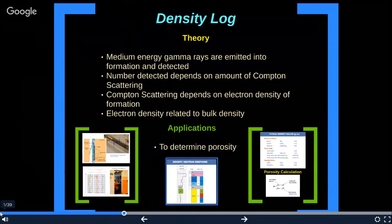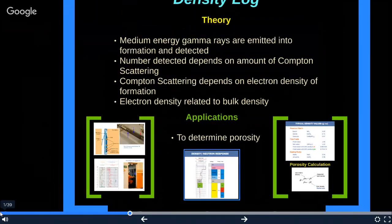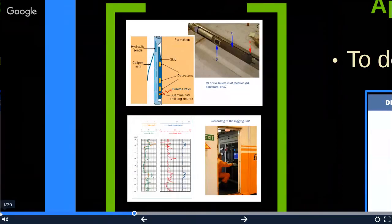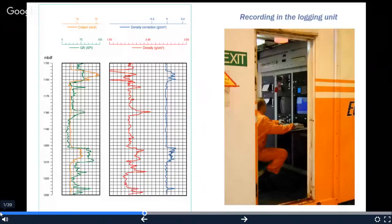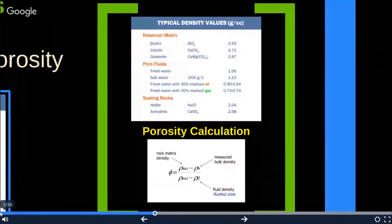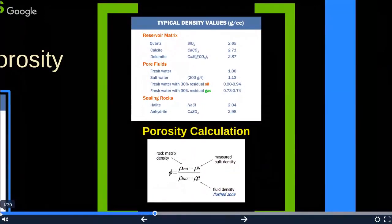The main application of the density log is to determine the porosity. To minimize the influence of the mud column, the skid-mounted source and detector are shielded. The openings of the shields are applied against the wall of the borehole by an eccentric arm. The force exerted by the arm and the plow-shaped design of the skid allow it to cut through the soft mud cakes. Any mud cake or mud remaining between the tool and the formation is seen as a part of the formation and must be accounted for. The number of Compton scattering collisions is related directly to the number of electrons in the formation. Consequently, the response of the density tool is determined essentially by the electron density. The electron density is in turn related to the bulk density, which in turn depends on the density of the rock matrix material, the formation porosity and the density of the fluid filling the pores.